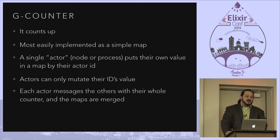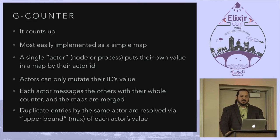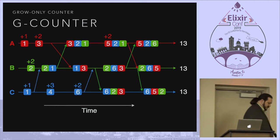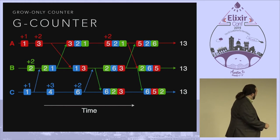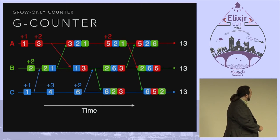Each actor messages all the others with their whole counter and the maps are merged. Duplicate entries by the same actor are resolved via an upper bound or max of each actor's value. So here we're adding one — A is adding one to its counter, then it adds two so it's three. This is a communication down here, and you can see the merge has both properties as the communication goes on.